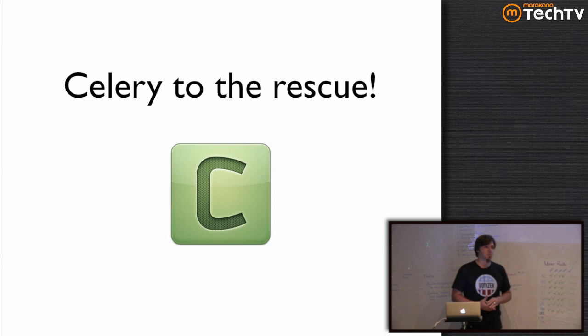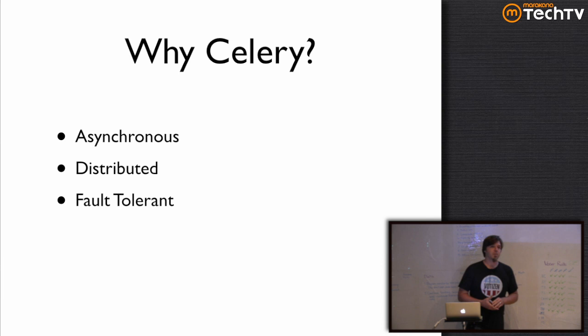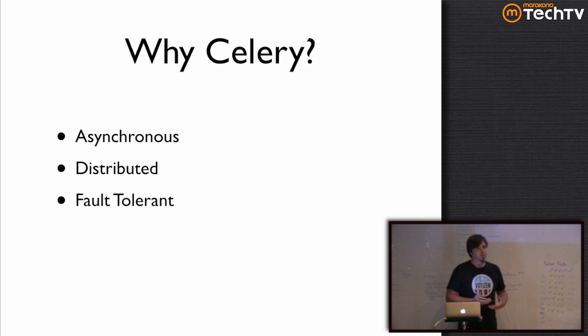Luckily there is a really great tool built for the Python community — first integrated in Django then split off — called Celery. It is a distributed task queue essentially. You use Celery because it is asynchronous, which means that you don't have to do all of your third-party interactions within the request-response cycle. It's distributed so you can spin up pools of workers as you need them and shut them down when you don't need them anymore. It's fault tolerant, has retries built in as a feature, and you can fail safely and still maintain your normal workflow.